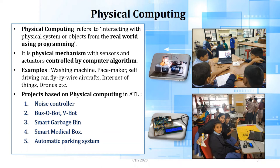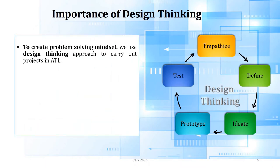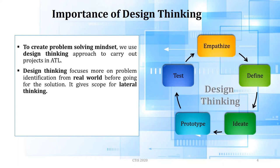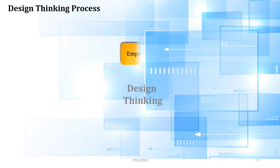The question is how we enable students to work on such projects. As per the guidelines of the ATL Innovation Machine, we follow the design thinking approach. Design thinking gives you scope to think laterally. Children get the opportunity to think critically, come up with out-of-the-box ideas, and it leads to innovation and strategic business thinking. Let me quickly go through the five steps of design thinking.